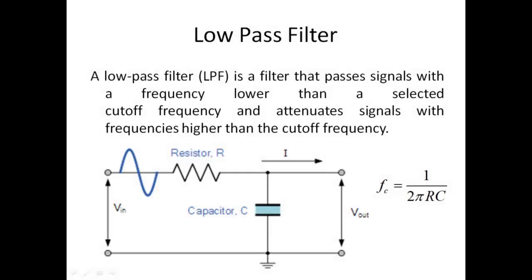In this video session we are going to study what is a low-pass filter. A filter is an electronic circuit which operates on a signal in terms of frequency — if we want to segregate the components of an input signal on the basis of frequency, then we use filters like low-pass filter, high-pass filter, and band-pass filter.